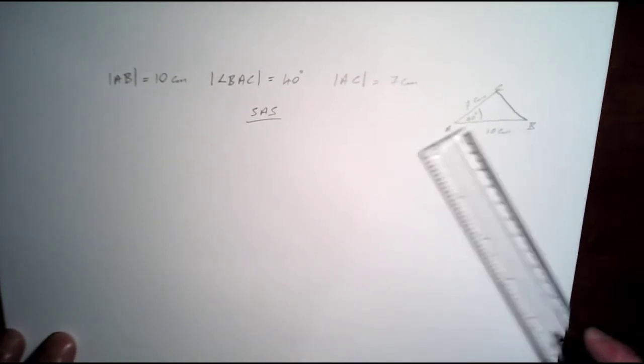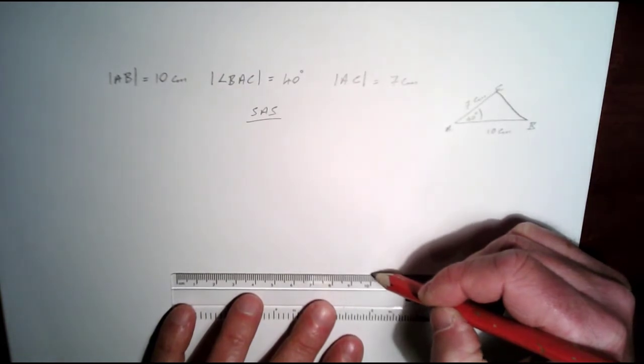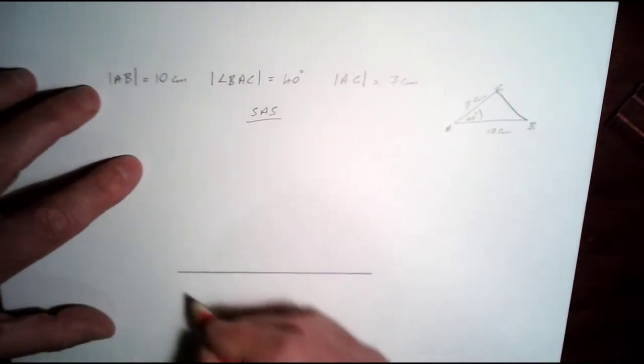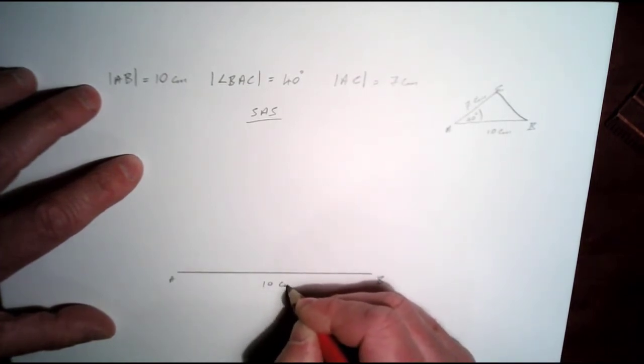So the first thing I'm going to draw is this base here at 10 centimeters. Let's construct that first. So there's AB and that's 10 centimeters in length.